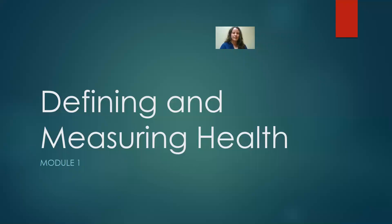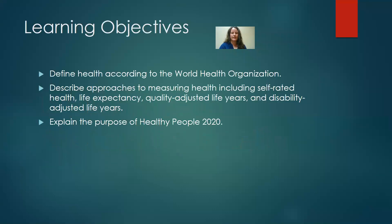In this Module 1 video we'll be talking about defining and measuring health. Our objectives for this topic are to define health according to the World Health Organization, to describe approaches to measuring health including self-rated health, life expectancy, quality adjusted life years, and disability adjusted life years, and we'll also explain the purpose of Healthy People 2020.